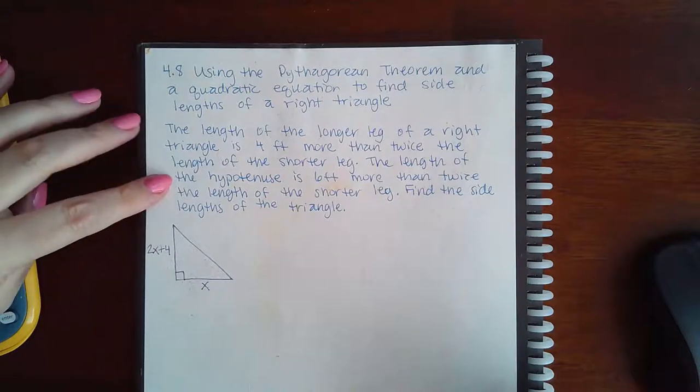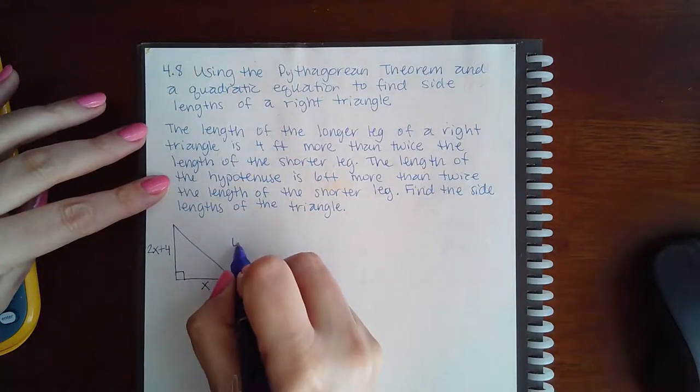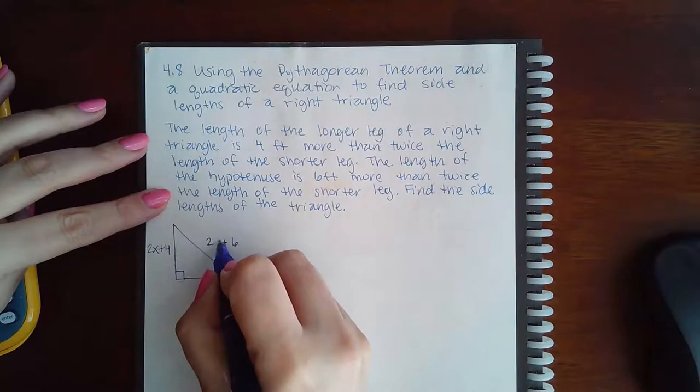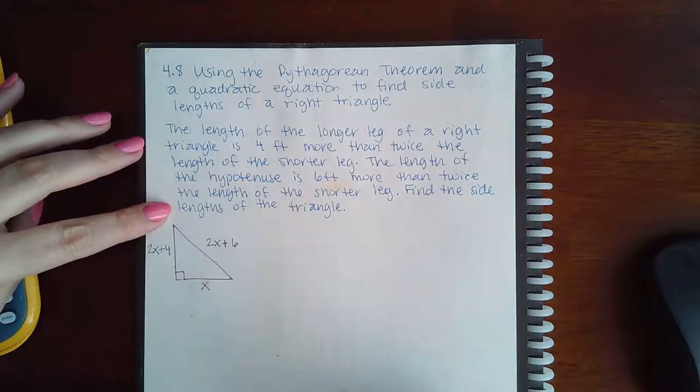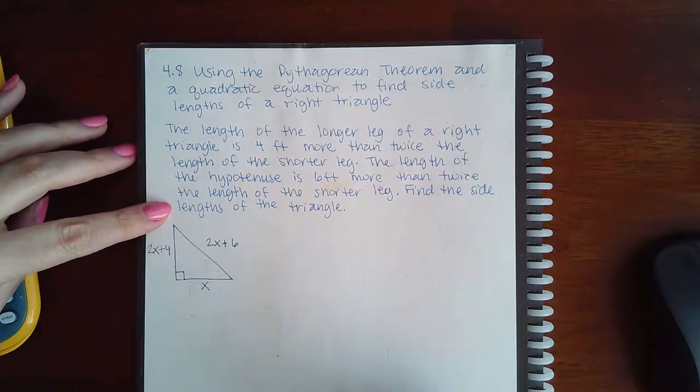The length of the hypotenuse is 6 feet more than twice the length of the shorter leg. Find the side lengths of the triangle.